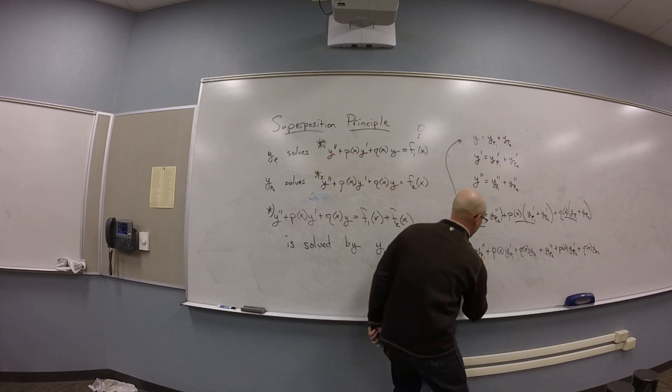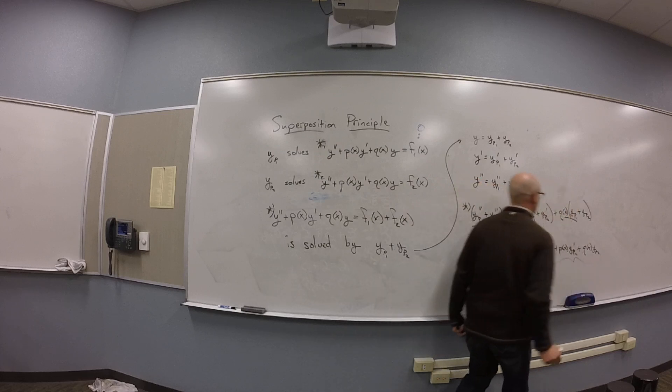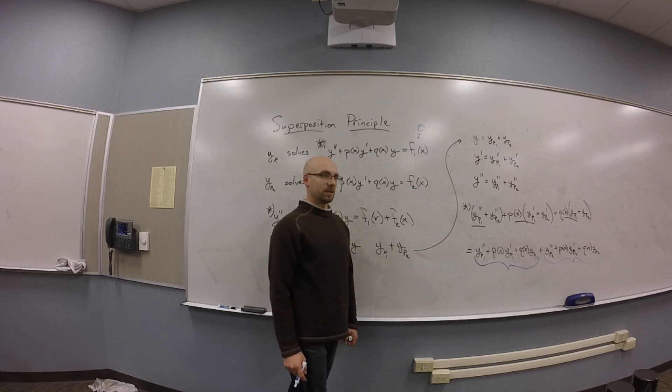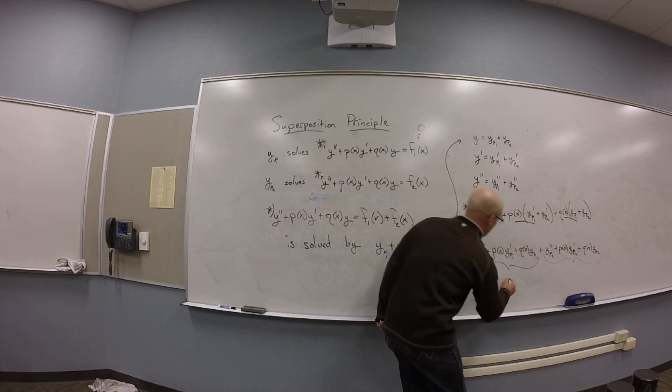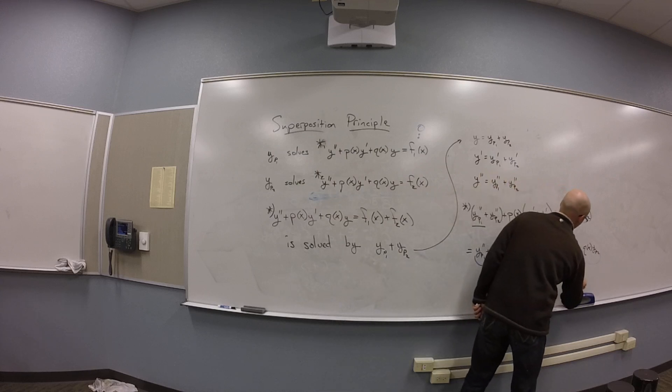And then this whole thing and this whole thing are stuff I know about. The first half is f1 of x, and the second half is f2 of x.